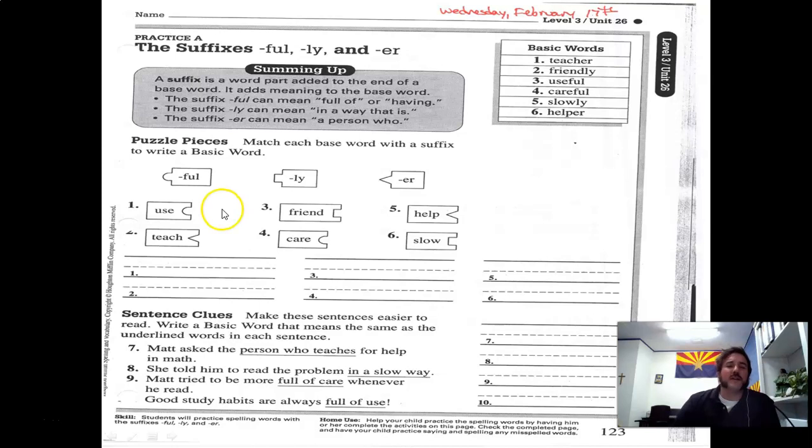So you're basically matching up the suffix puzzle pieces with the correct root word. I think you can probably figure out that number one is useful. And it's just getting you used to understanding that you attach it to the end of the base word. And then you spell it correctly. Useful. And number one, teach. Not teach full. Teach ly. No. You can tell the puzzle piece at work. Teacher. Right? Again, training yourself that a suffix comes at the end of the root word. And then you spell teach er. One who teaches. Right?